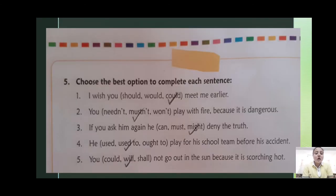Next exercise: choose the best option to complete each sentence. You have three options in the bracket for each. First answer: could — he could meet me earlier. Second options: needn't, mustn't, or won't.